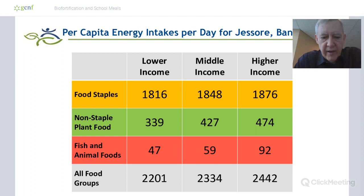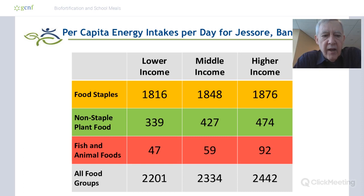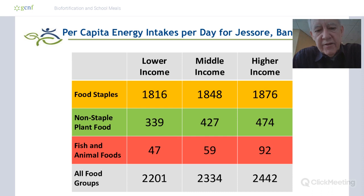Here are some data for Bangladesh to show what typical dietary patterns look like in developing countries. The same pattern happens country after country. I like to divide the diet into food staples, non-staple plant foods, and fish and animal foods. Look at how constant food staple consumption is across lower and higher income groups.